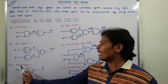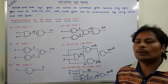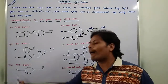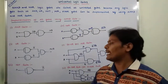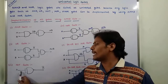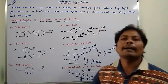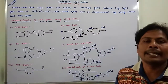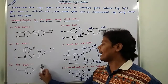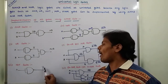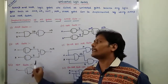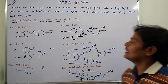Third one is NOT gate. So NOT gate is applied on only one input. So A is an input, that input applied to the NAND gate, then we are getting A complement. So A bar is the output of NOT gate.